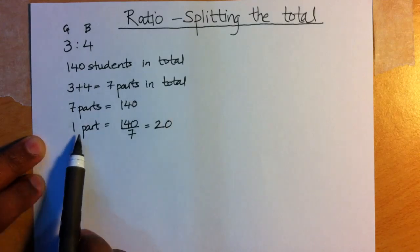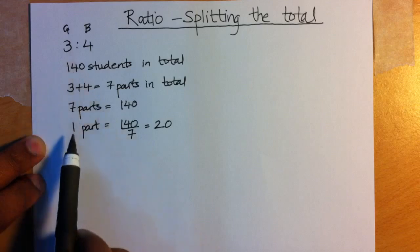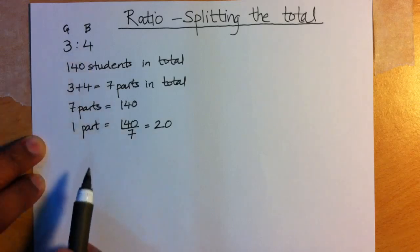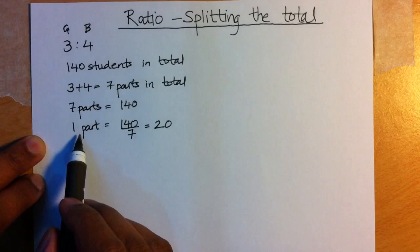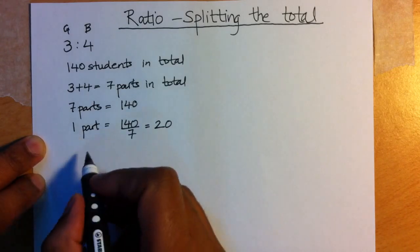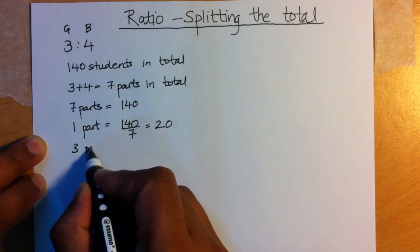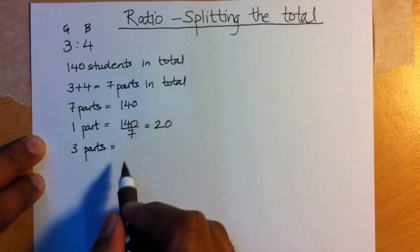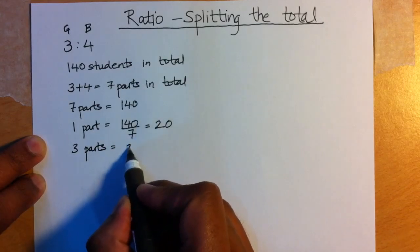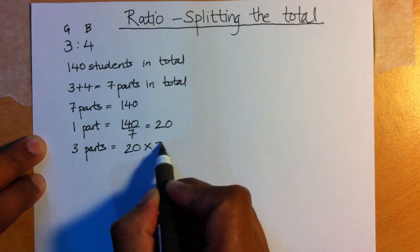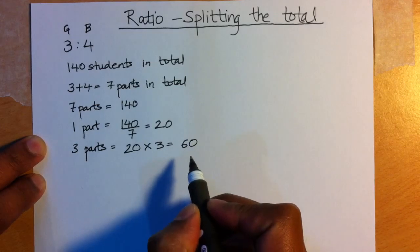Now that you know 1 part, you can actually find out 3 parts and you can even find out 4 parts. 3 parts is simply 1 part times 3. So 3 parts equals the number in 1 part, that's 20, times 3. So that would be 60 students.